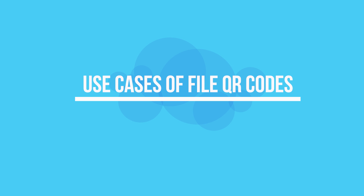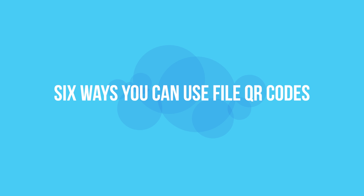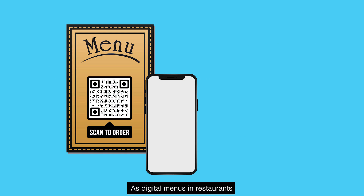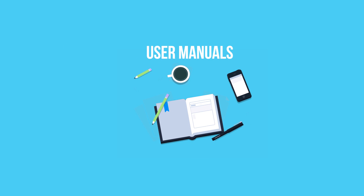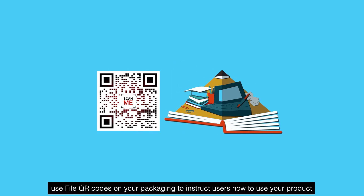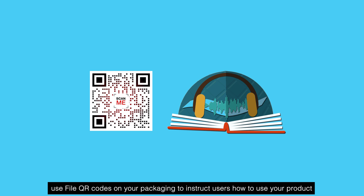Use cases of file QR codes. Here are six ways you can use file QR codes. Restaurants: use them as digital menus. User manuals: if you have technical products, use file QR codes on your packaging to instruct users how to use your product.